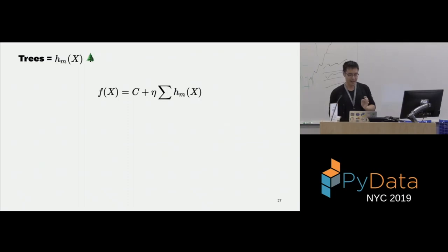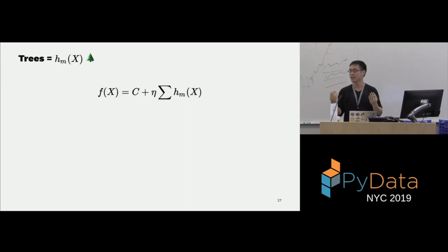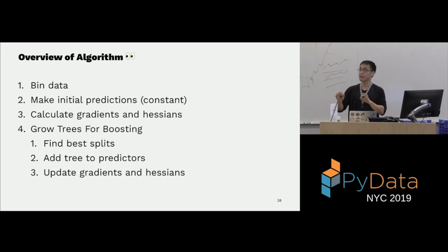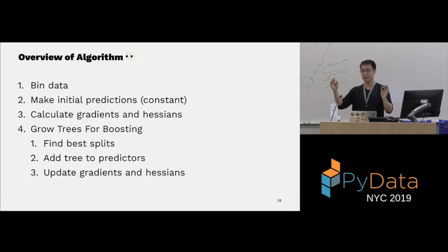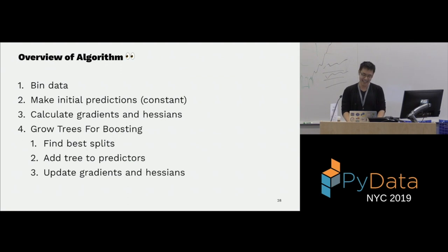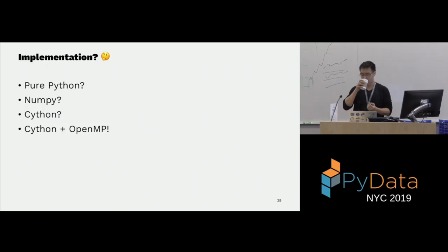That's the crash course on how to build this. The whole point of all this math was to find these H(m) functions that we sum to approximate F. Stepping back and going through what it feels like in chronological order: first the algorithm bins the data, then makes an initial constant prediction, then computes gradients and Hessians, and then enters the boosting process.